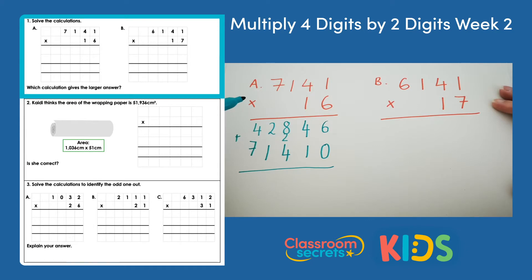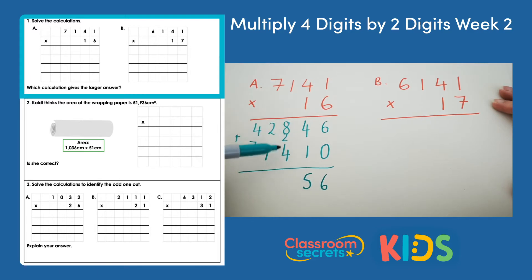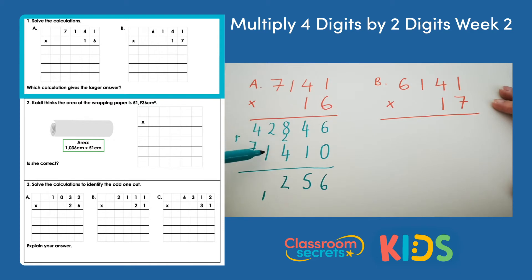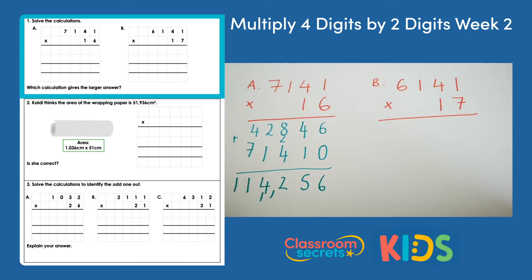The final step is to add all together. So 6 and 0 is 6. 4 and 1 is 5. 8 and 4 is 12, so 2 and 1 is 3, add 1 more is 4. And then 4 and 7 makes 11. So the answer to this calculation is 114,256.